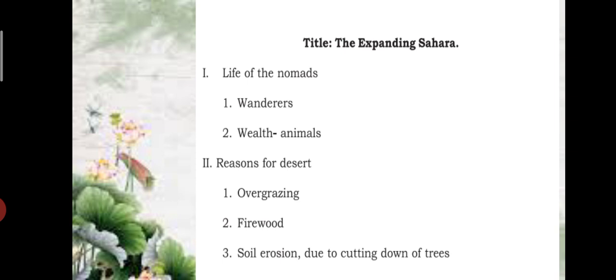The title for the notes is 'The Expanding Sahara.' The first main point is the life of nomads. You need to paraphrase and summarize the reason for the desert — why that place became a desert — covering overgrazing, firewood, and soil erosion due to cutting of trees. These are the main points and sub points of the paragraph to keep in mind when summarizing.